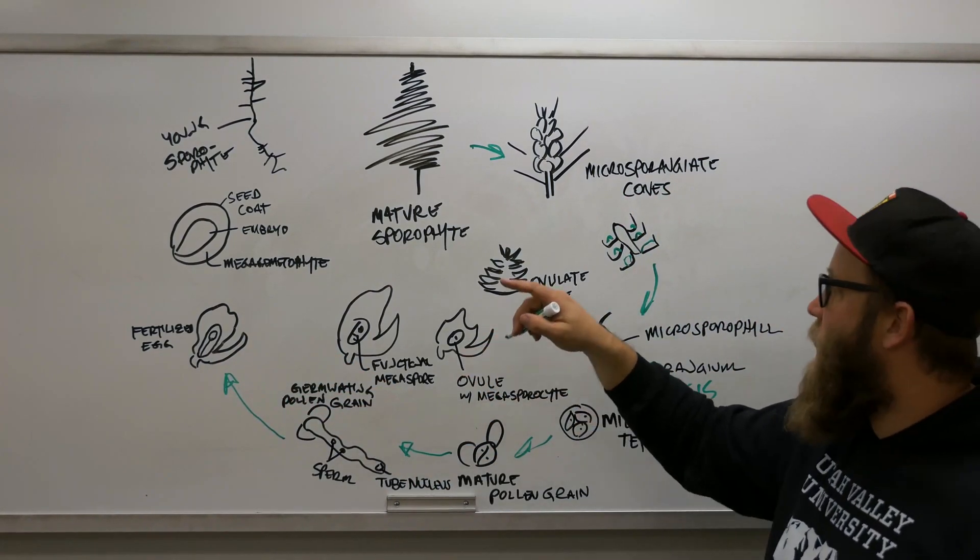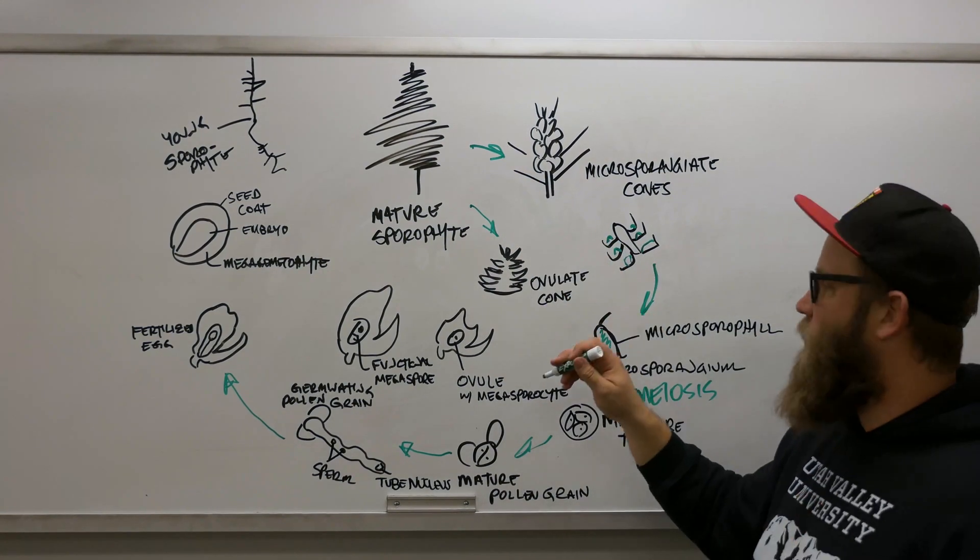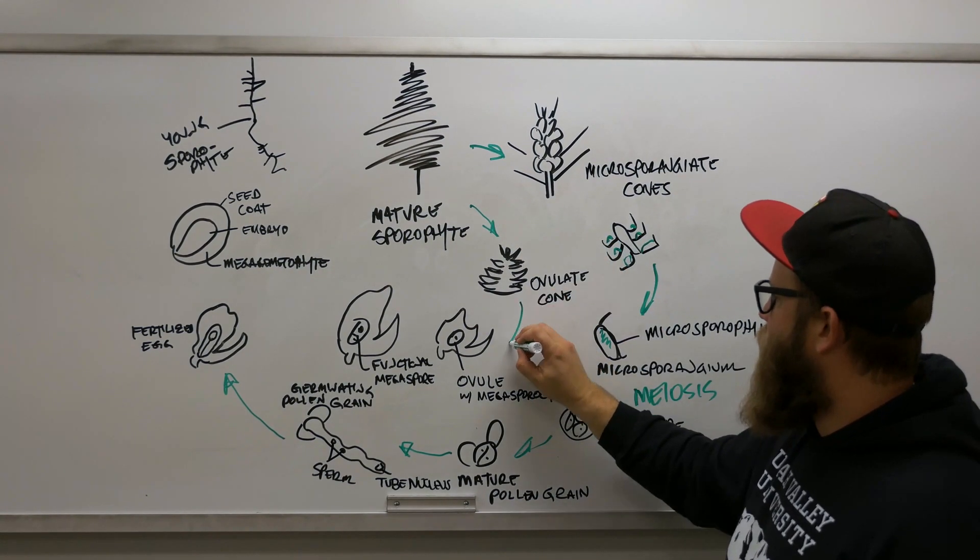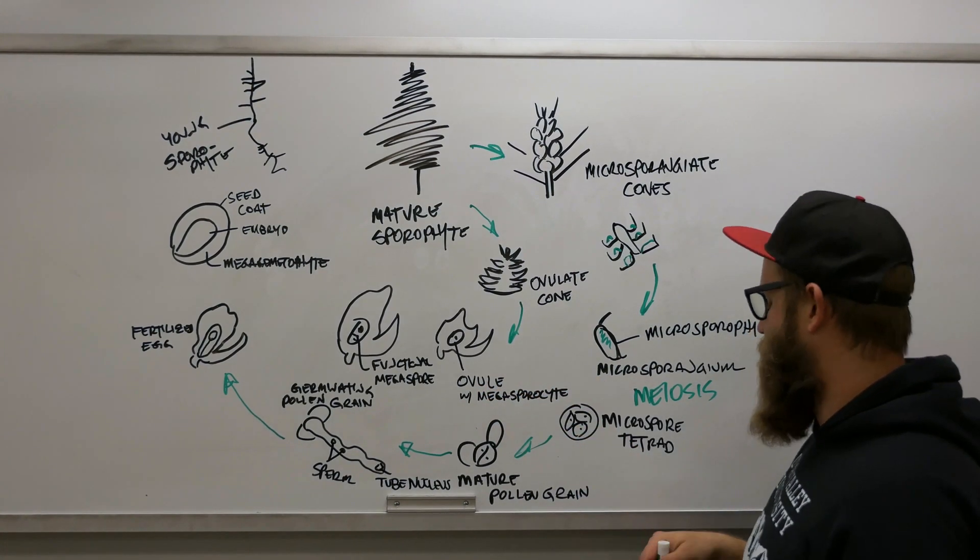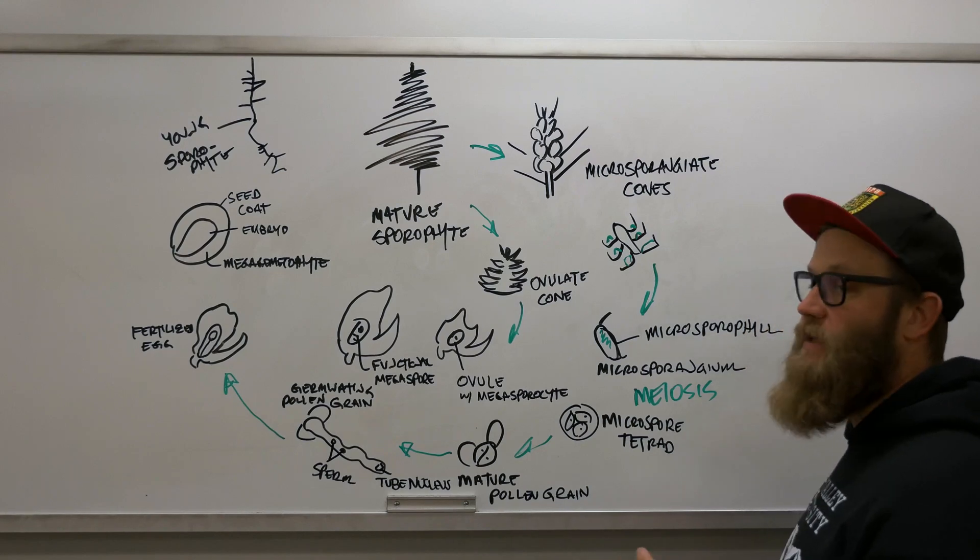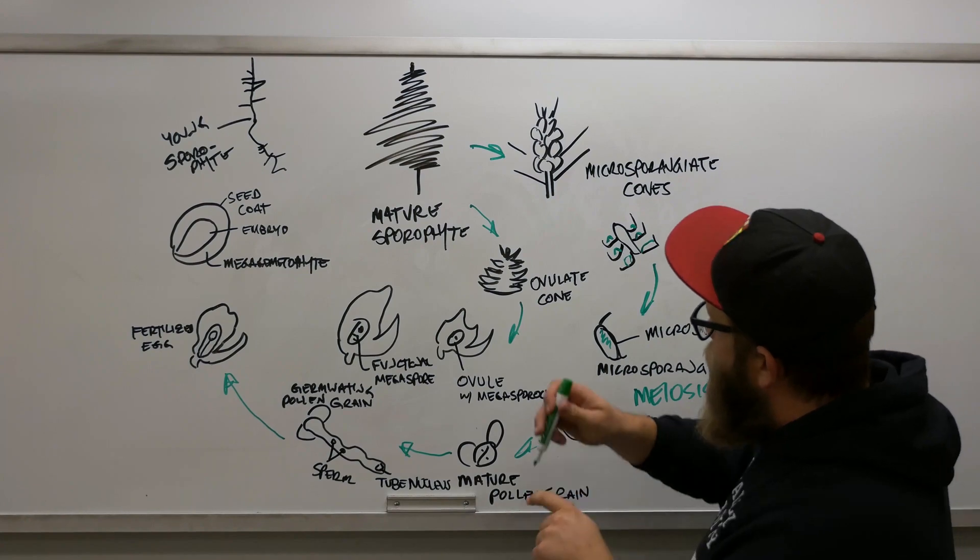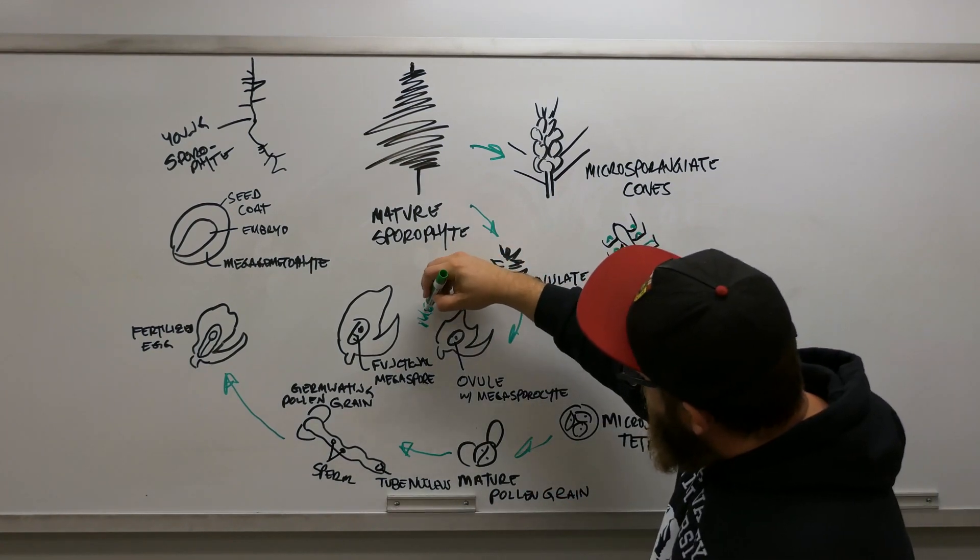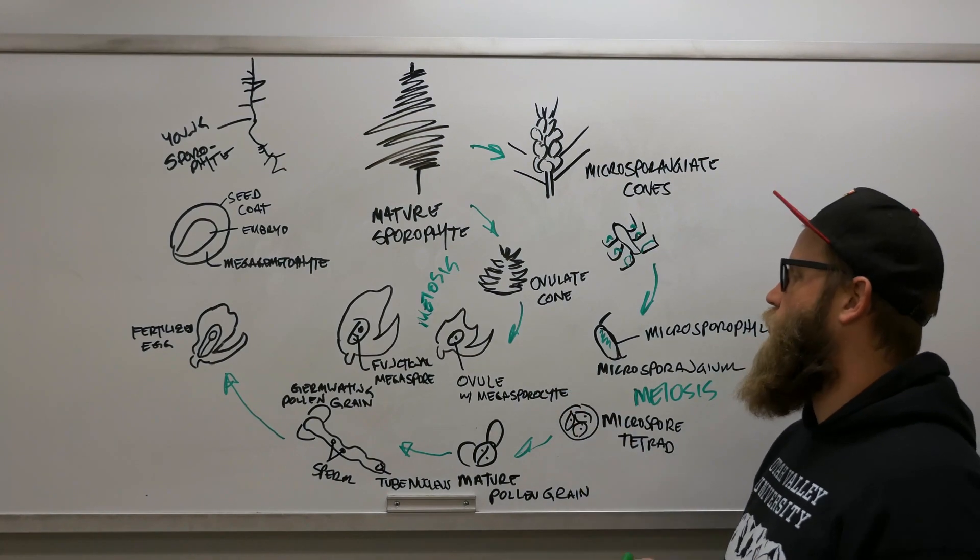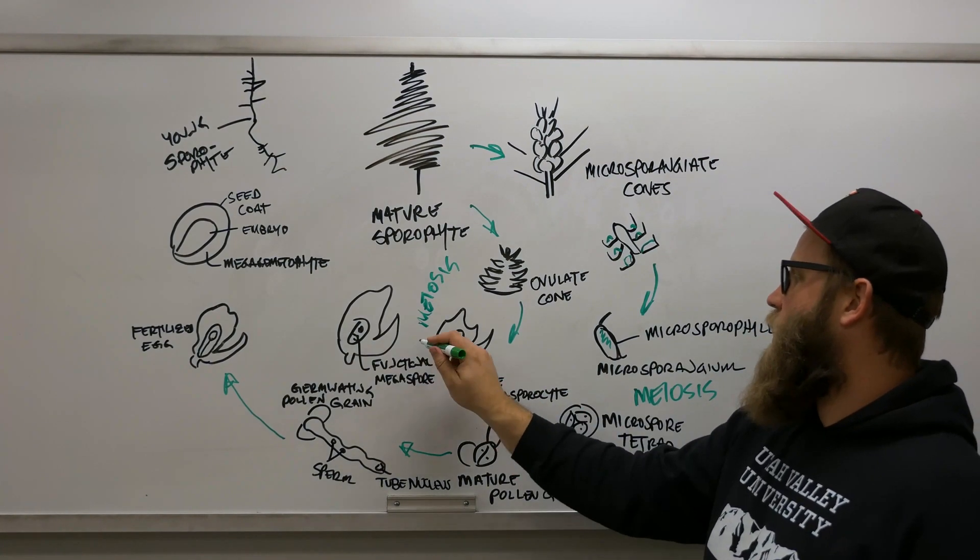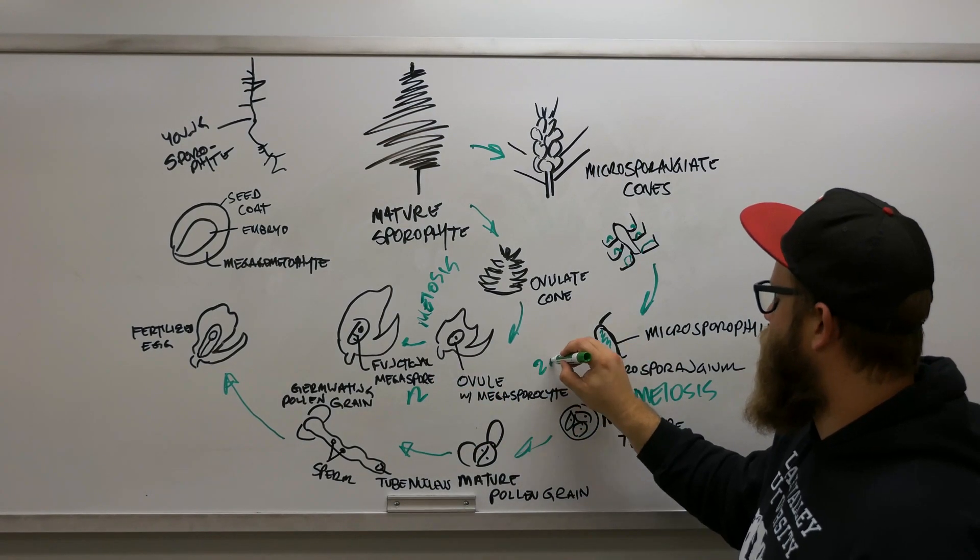We'll take a step back and we can have these ovulate or female cones, and inside those are this ovule with a megasporocyte. The sporocyte, C-Y-T-E, that's going to help you know it's a cell. Right here meiosis occurs again in these organisms, and then we've got a functional megaspore that's n. So up here we're still 2n, to go back here we're n and n.